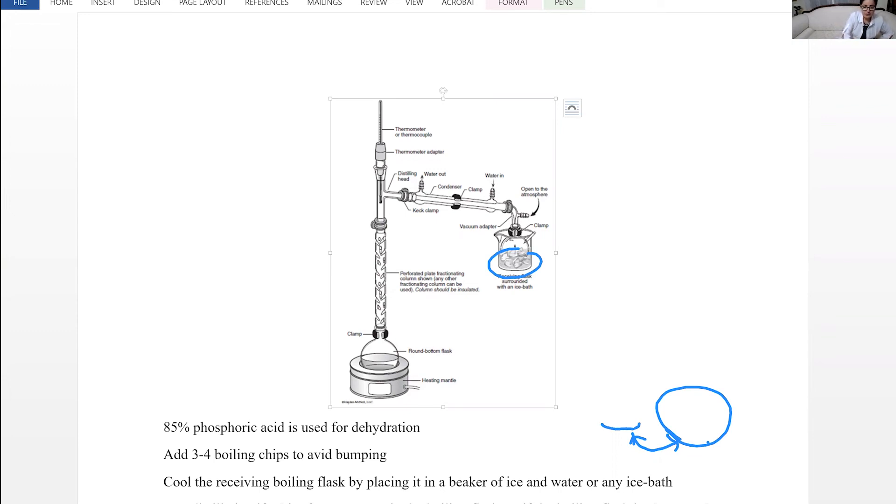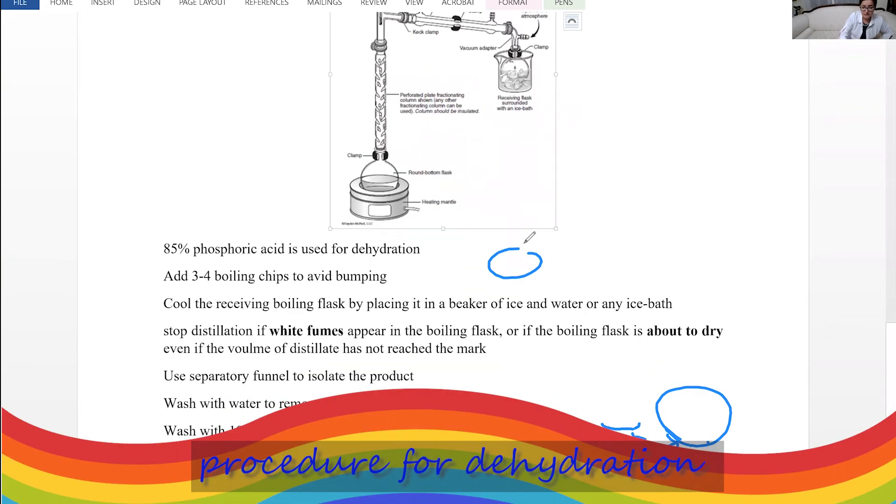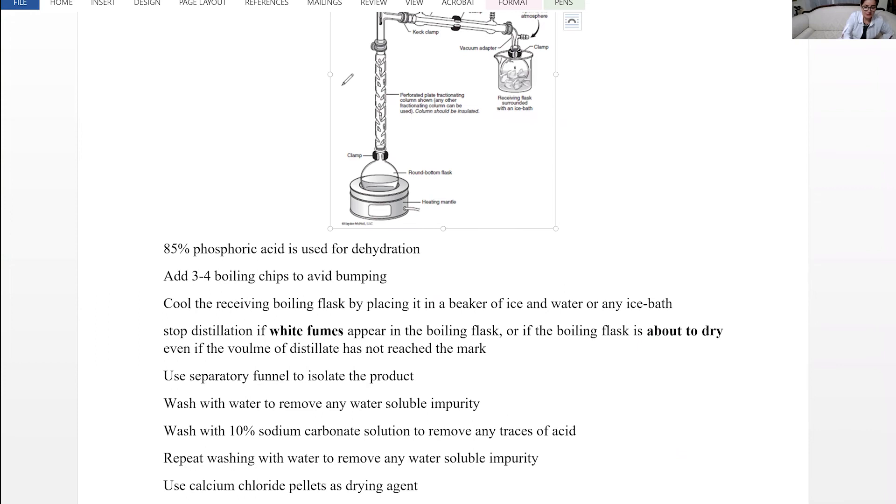The reagent used for dehydration is 85% phosphoric acid. Because it's distillation you want to make sure to use boiling chips to prevent bumping. Placing the receiving flask in ice water bath is going to help condensation.